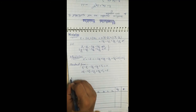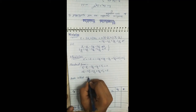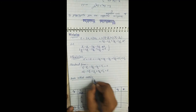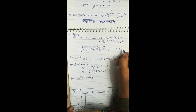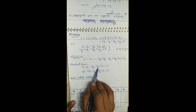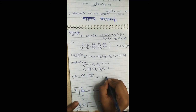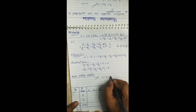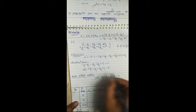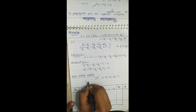We add the slack variables to the objective function with coefficient zero. For the initial basic feasible solution, since y1, y2, y3, and y4 are all non-negative, we set them all equal to zero. From equation 1 we get s1 equals 0, and from equation 2 we get s2 equals 6.